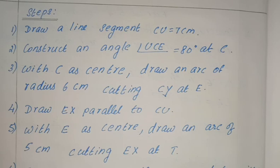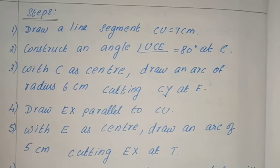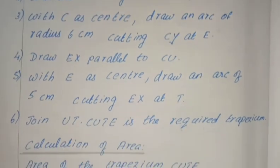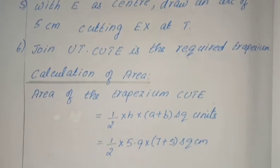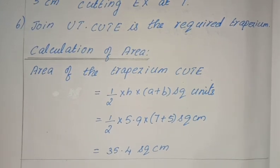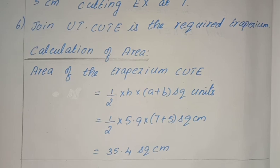After drawing the construction, we will write down the steps and move on to the area. Area of the trapezium is half into H into (A plus B) square units. H is equal to 5.9 cm, A is equal to 7, and B is equal to 5. So 7 plus 5 is equal to 12. After calculation, we get the area as 35.4 square centimeters.